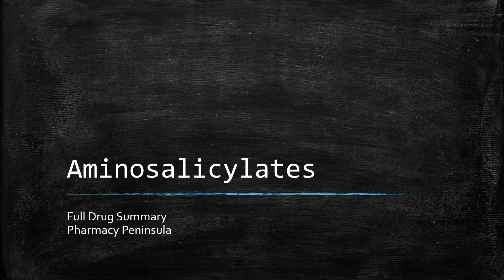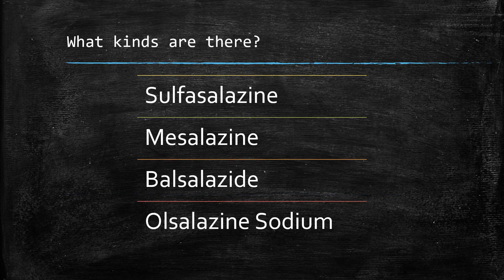Hi guys and welcome to a full drug summary of amino salicylates. The main four types are sulfasalazine, mesalazine, balsalazide, and olsalazine sodium.